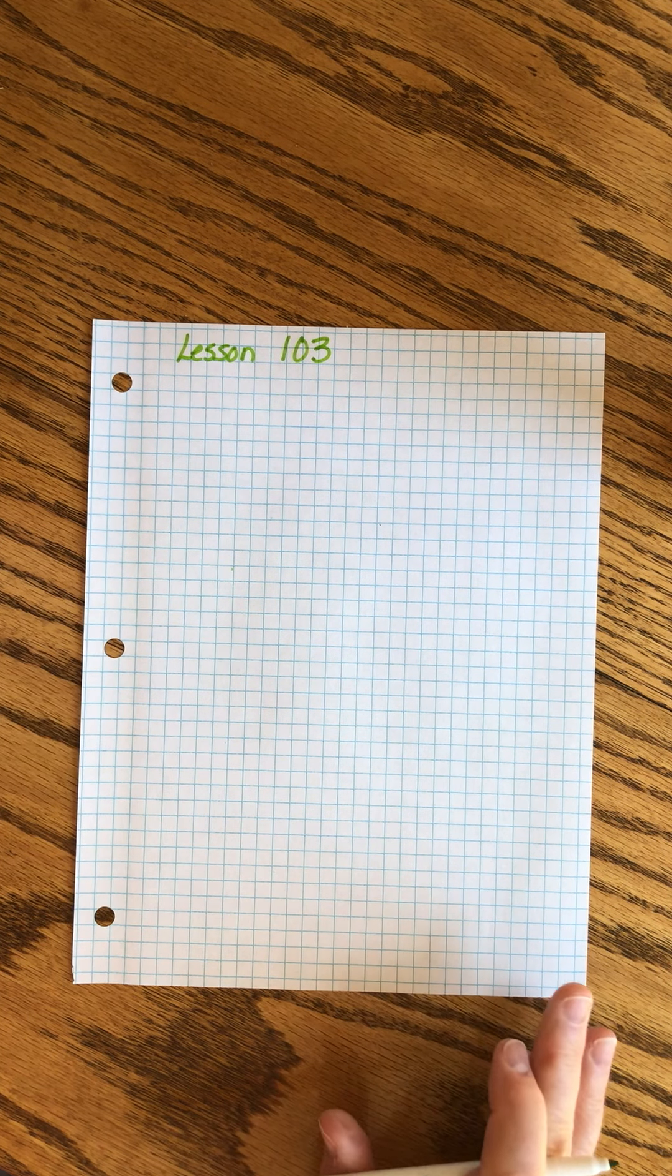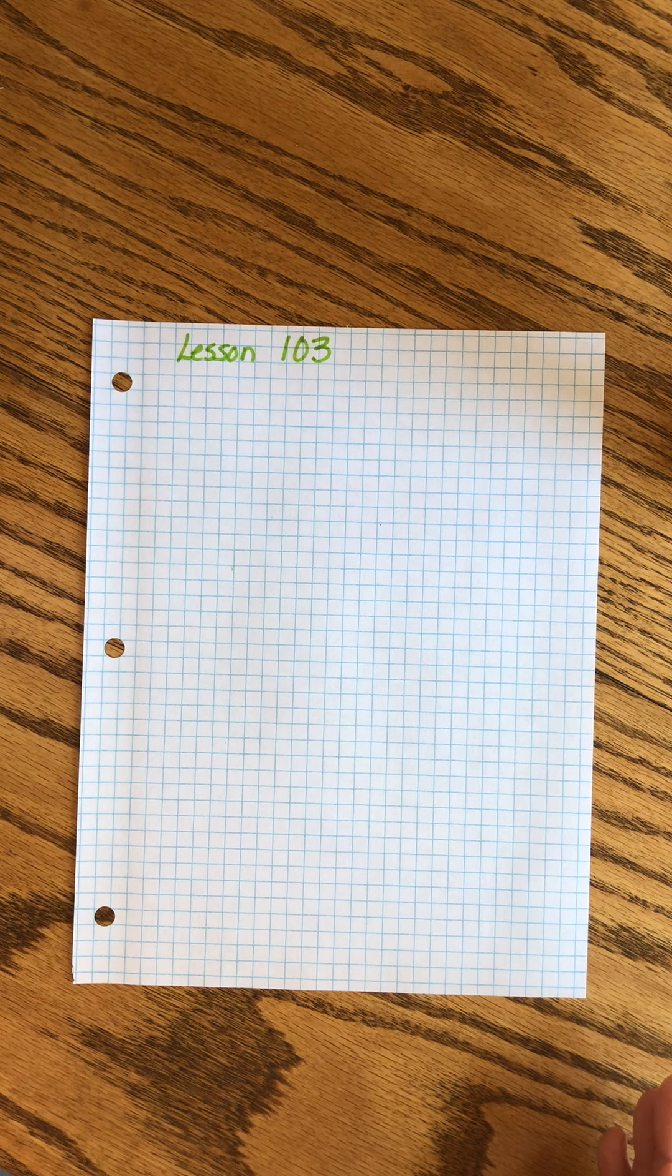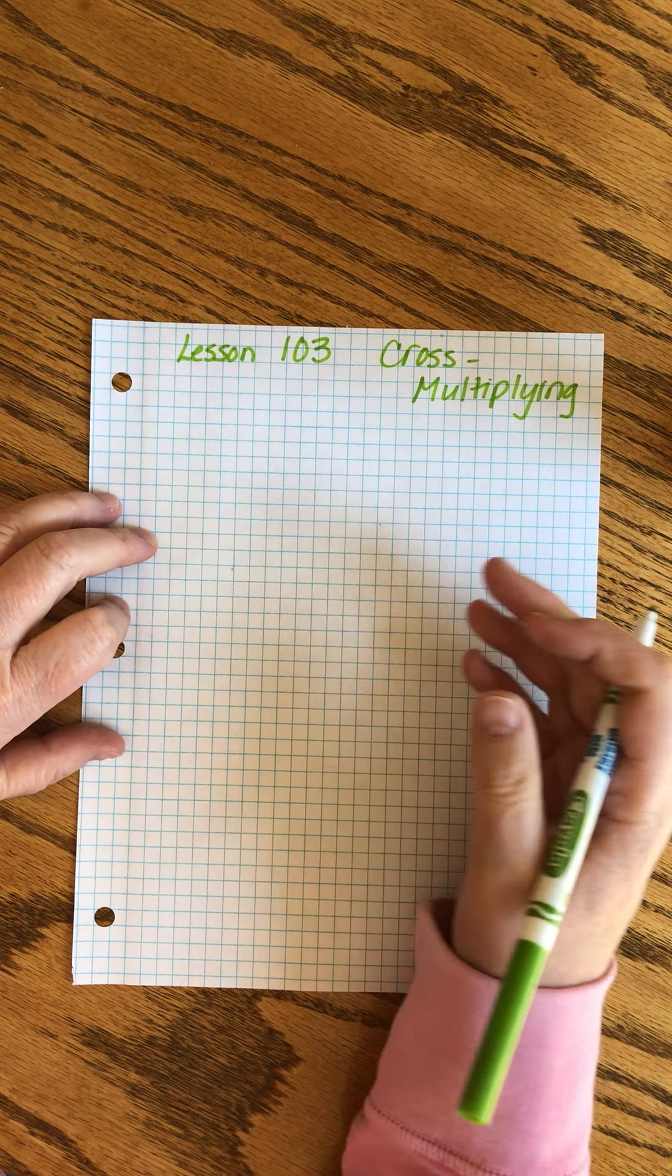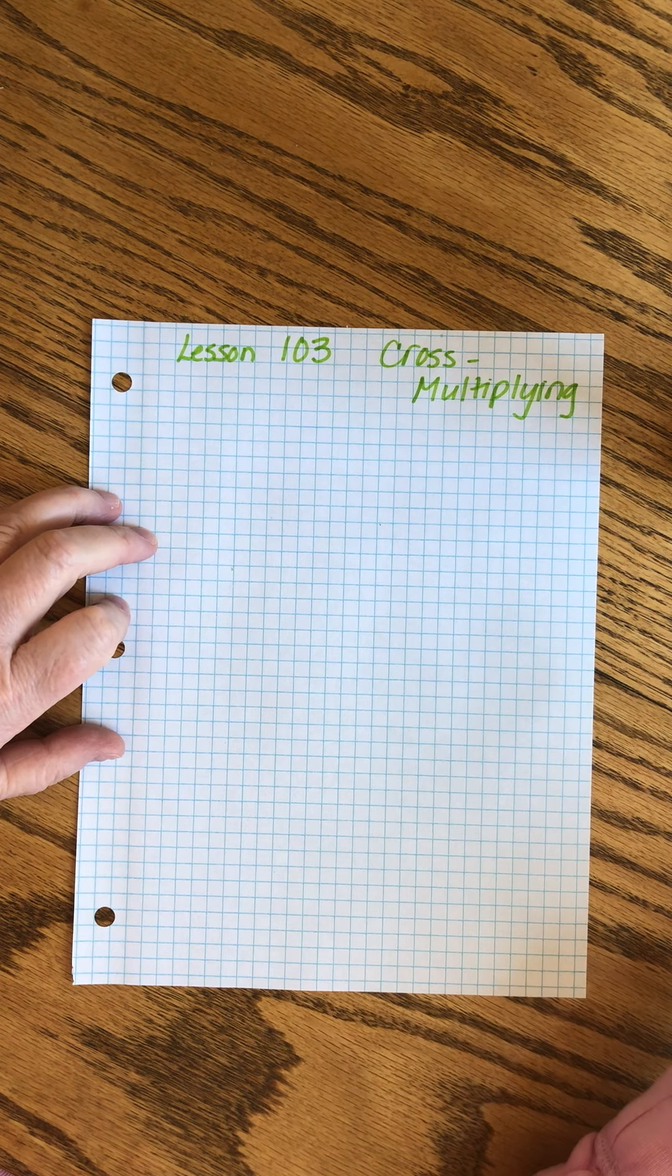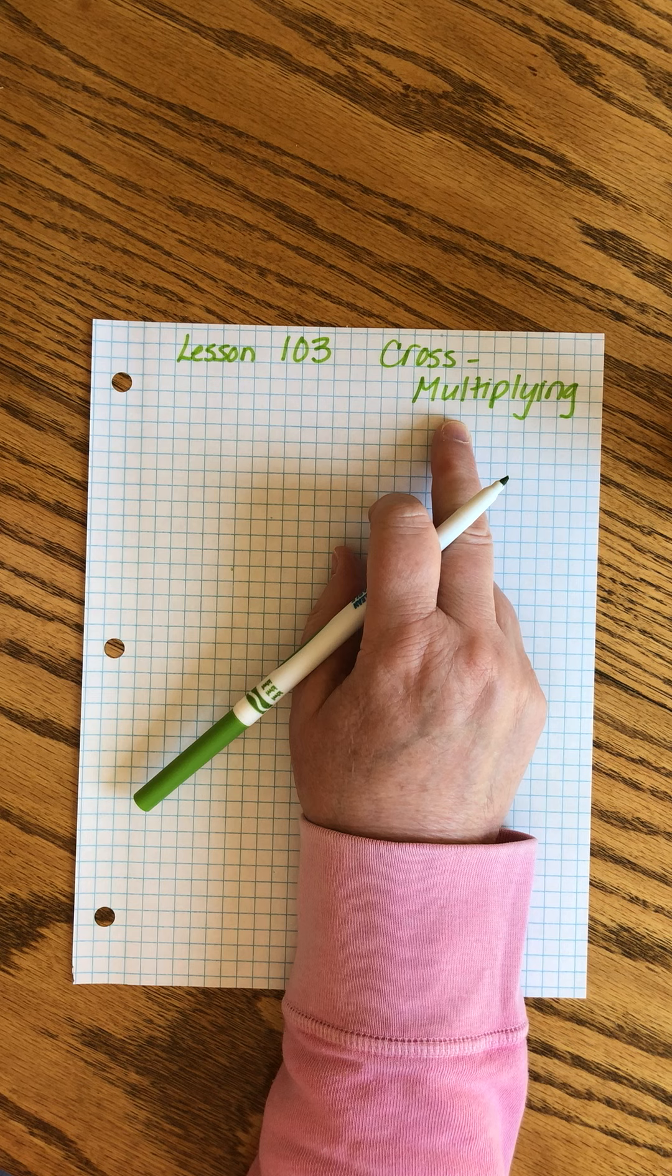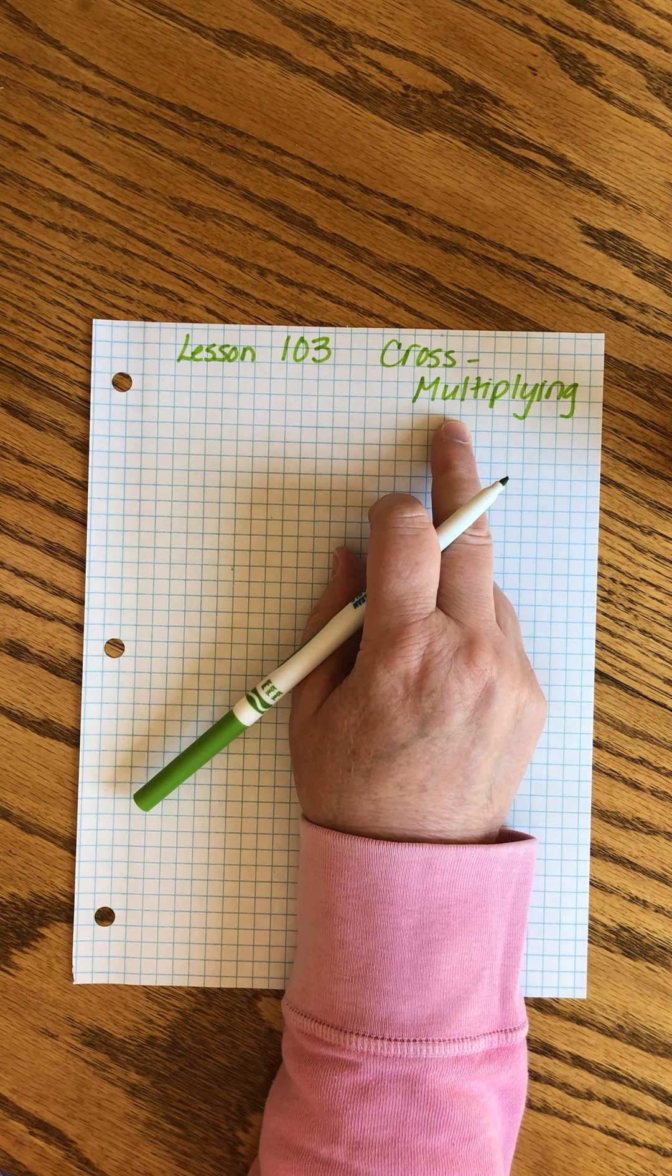Saxon Math 7-6 Lesson 103. Greetings on this fine sunny May day, we're gonna learn a super cool tool today that you're gonna be using for the rest of your algebra careers. It is called, in my mind, cross multiplying. John uses a slightly different name, he uses cross products. Products are the answer to multiplication problems, so it's kind of the same thing, but I've been saying cross multiplying for a really long time and I don't want to change. So that's what we're gonna call it.